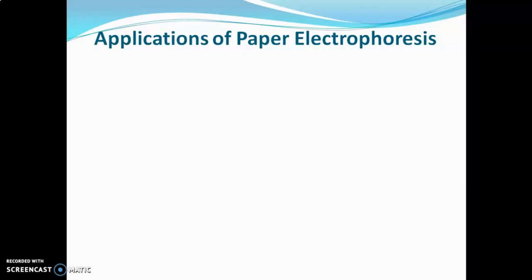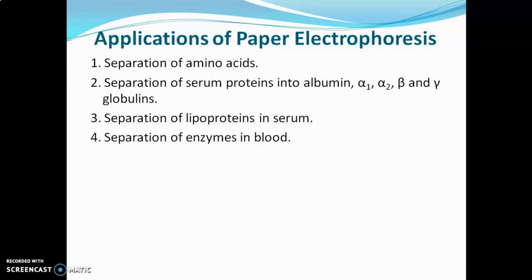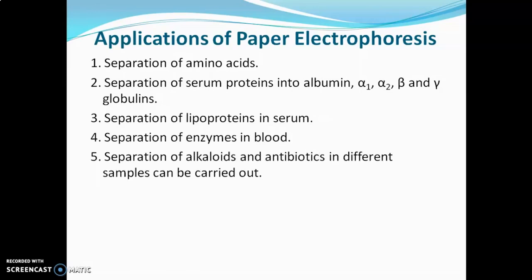Applications of paper electrophoresis: the first and major application is separation of amino acids. The second is separation of serum proteins into albumin, alpha-1, alpha-2, beta, and gamma globulins. Others include separation of lipoproteins in serum, separation of enzymes in blood, and separation of alkaloids and antibiotics in different samples.